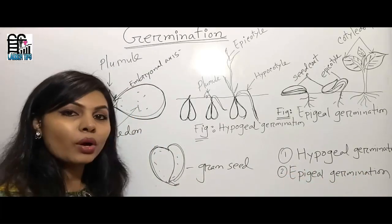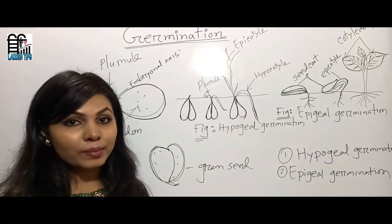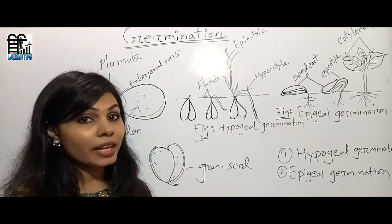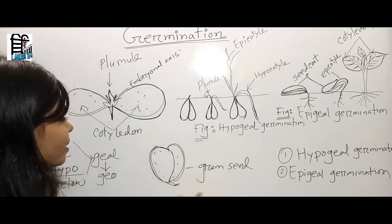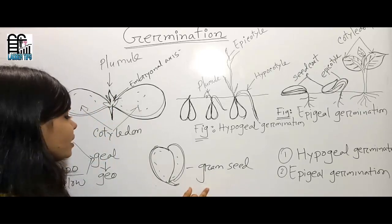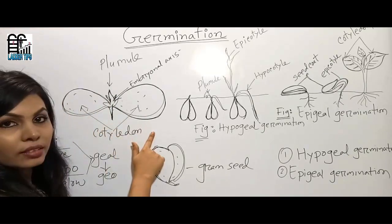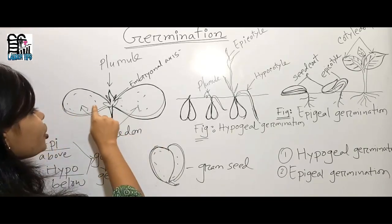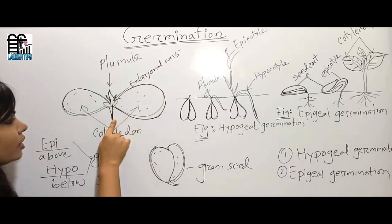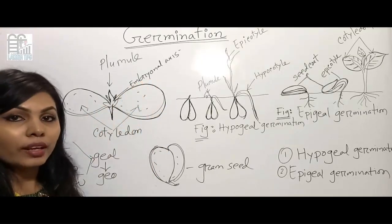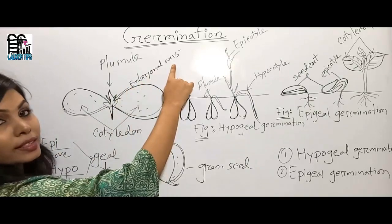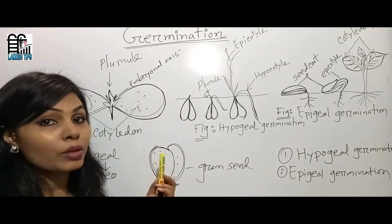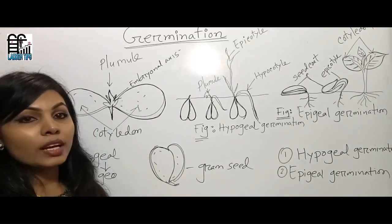As an example of hypogeal germination, I have drawn a gram seed here. The gram is a non-endospermic dicot seed. In a dicot seed, there are two cotyledons, and at the junction of the two cotyledons there is a white-colored structure called the embryonal axis. The upper apex of the embryonal axis is called the plumule.